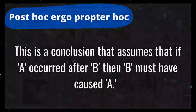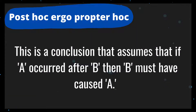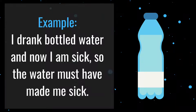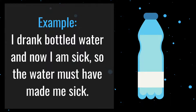Number 3 is post hoc ergo proctor hoc. This is a conclusion that assumes that if A occurred after B, then B must have caused A. For example: I drank bottled water and now I am sick, so the water must have made me sick. In this example, the author assumes that if one event chronologically follows another, the first must have caused the second. But the illness could have been caused by the burrito the night before, a flu bug working on the body for days, or a chemical spill across the campus. There is no reason, without more evidence, to assume the water caused the illness.